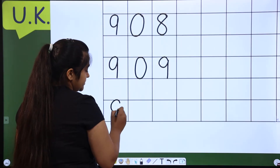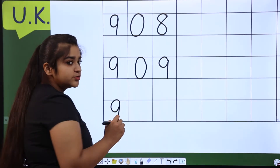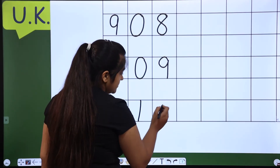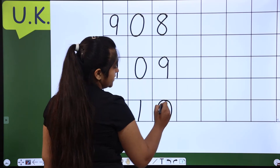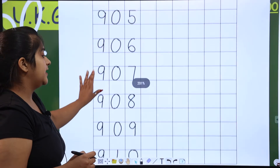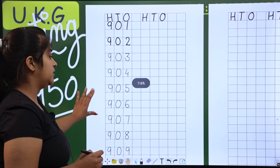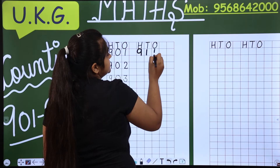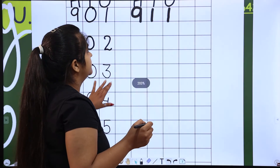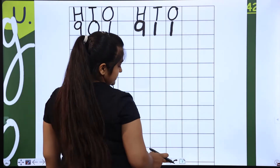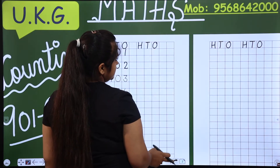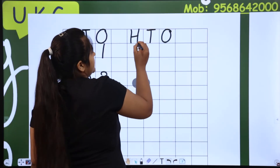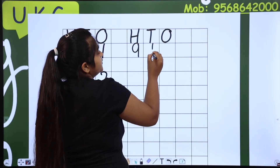Then, what will come after 909? Now we are going to count. What will come after 909? 910 — 900 and 10. And the next line starts with 911. Very good. 9 hundreds, 1 ten, 1 — that is 911. How untidy it is — let's erase it and write neatly. Okay? 911.